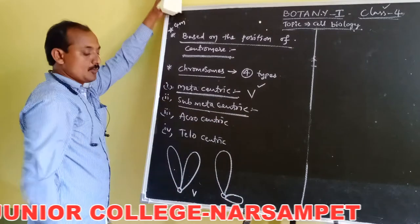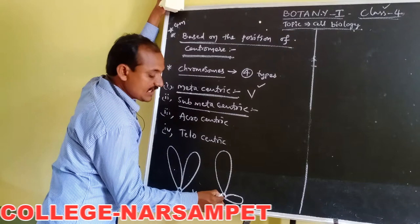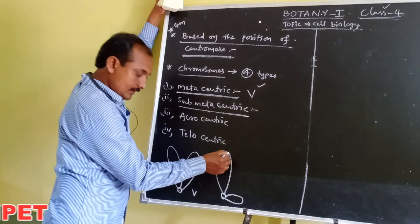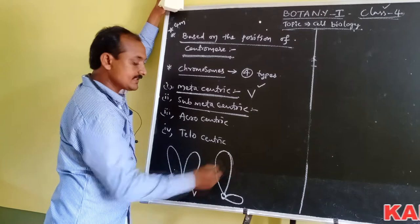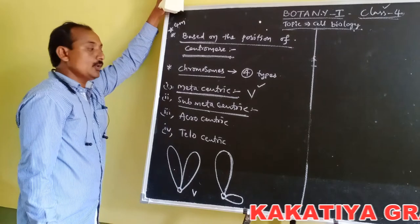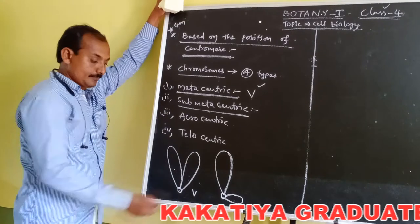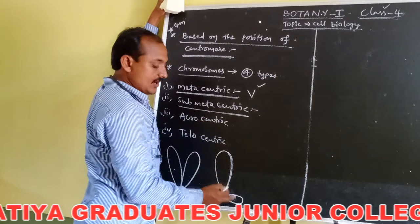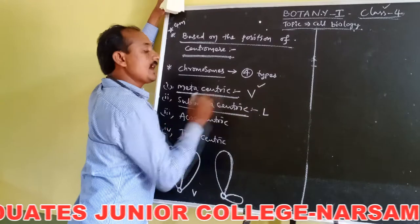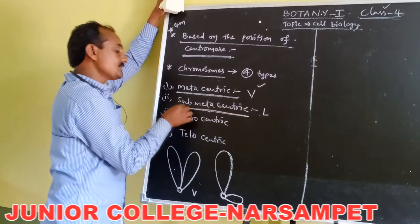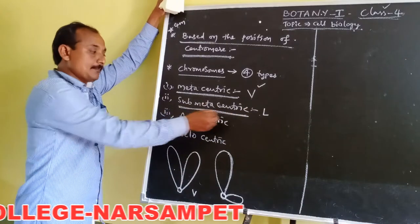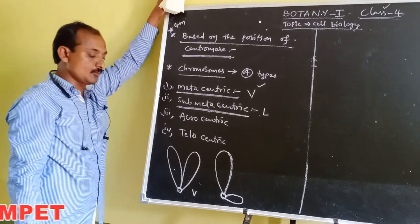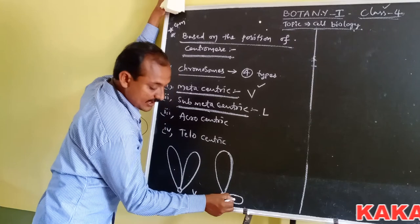In submetacentric chromosomes, the centromere is nearer to one arm and far away from the other arm. Hence the chromosome consists of two unequal chromatids — one is short and another is long. During anaphase, these chromosomes appear L-shaped.